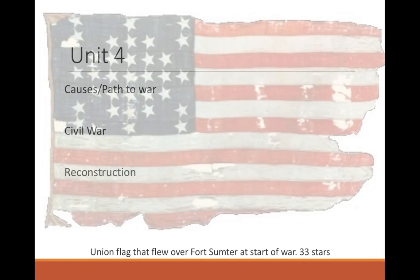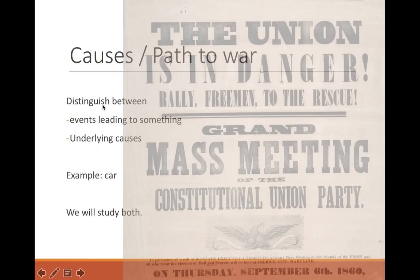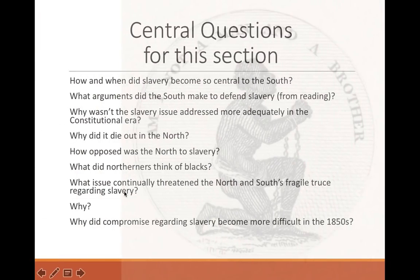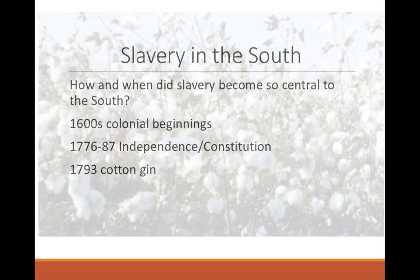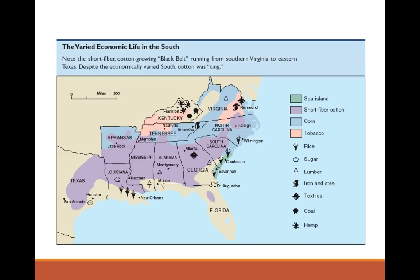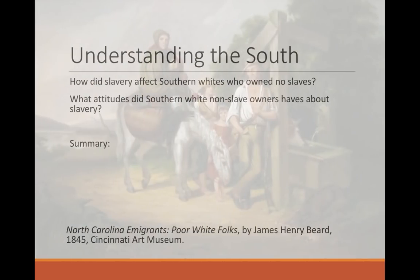If you remember, last time we were doing the causes and events leading up to the Civil War, this first part of Unit 4. I covered the differences between the underlying causes of something and the events leading up to it. I gave you those central questions — take a moment, maybe pause this and look them over and see which ones I've answered, which you can answer, and which ones still remain. We focused on the South and how slavery began and how it became so central to the Southern economy and Southern identity.